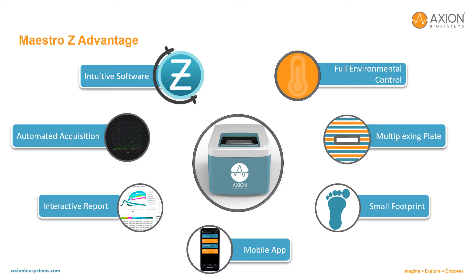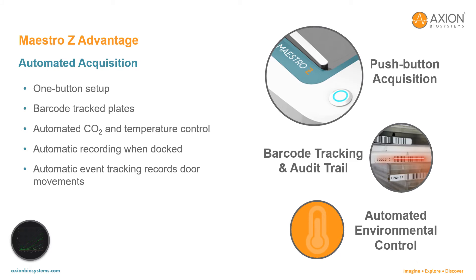Axion's Maestro Z is a bench-top size instrument with a built-in incubator for fine control and tracking of temperature and CO2. The viewing window in the plate allows for multiplexing with other assays. The small footprint means it doesn't take up much space in the lab. The software is intuitive with automatic data acquisition, interactive reports, and you can even use a mobile app to monitor your experiments remotely. You start the assay with the push of a button to dock the plate into the Maestro Z, which automatically triggers regulation of temperature and CO2 levels. The plate usage is logged via an integrated barcode scanner for convenient experiment tracking.